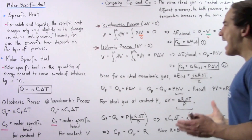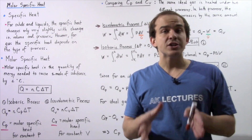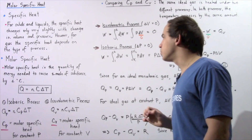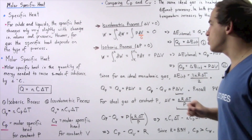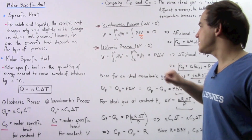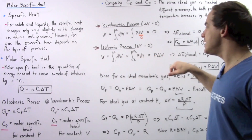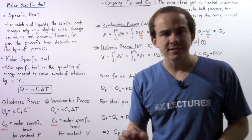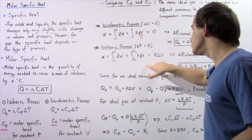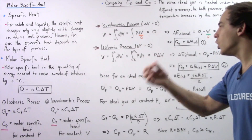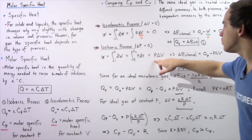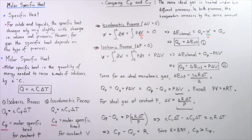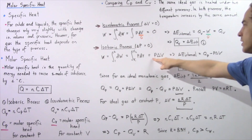In an isobaric process, the change in pressure is equal to zero because the pressure is assumed to be constant. The work done in an isobaric process is equal to the integral of P dV from V1 to V2. Because the pressure is constant, we can take it out and integrate to get the work equals P multiplied by (V2 minus V1), or equivalently, P times ΔV.